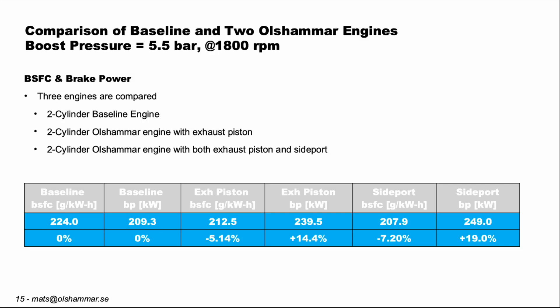If we compare the baseline engine with the two Olsammar engines at the same boost pressure and same RPM: the baseline values of 224.0 grams per kilowatt hour and 209.3 kilowatts represent 0% change as the reference. With the exhaust piston only we have 5.14% less fuel consumption and 14.4% more power. And with the side port added we have minus 7.2% fuel consumption and plus 19% in power.